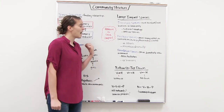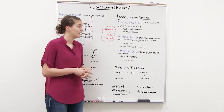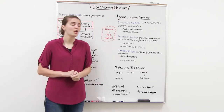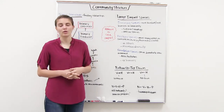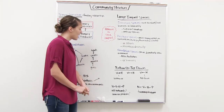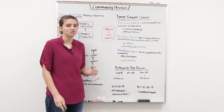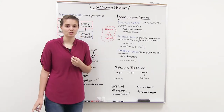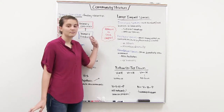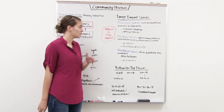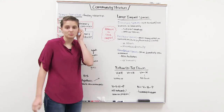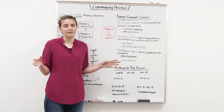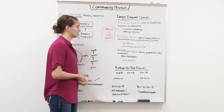The keystone species doesn't necessarily have to be the most abundant in the community. Instead, it exerts strong control on community structure because of its ecological role. Some keystone species help maintain diversity — for example, a keystone species that preys on a dominant species. If you remove that keystone species, the dominant species spreads unchecked, taking up habitats occupied by other species, and species diversity is lowered.